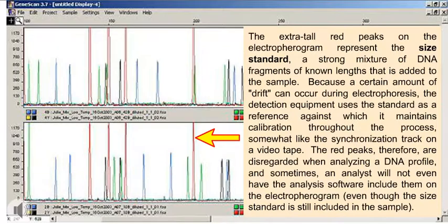The extra-tall red peaks on the electropherogram represent the size standard, a strong mixture of DNA fragments of known lengths that is added to the sample. Because a certain amount of drift can occur during electrophoresis, the detection equipment uses the standard as a reference against which it maintains calibration throughout the process, somewhat like the synchronization track on a videotape.